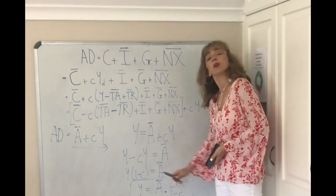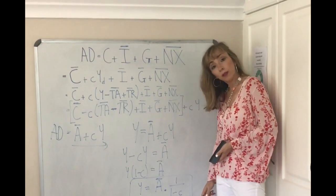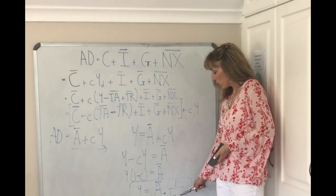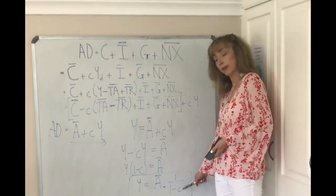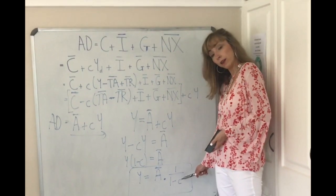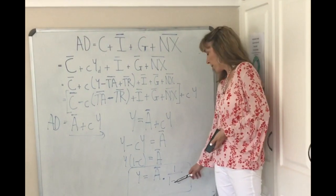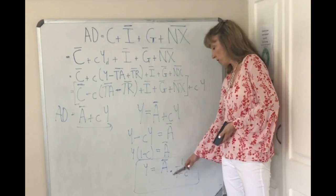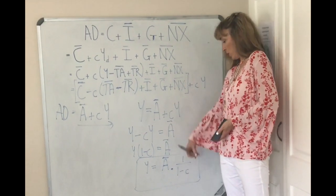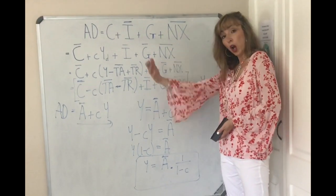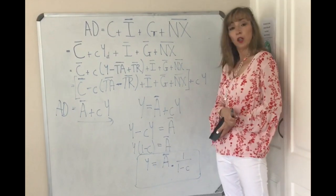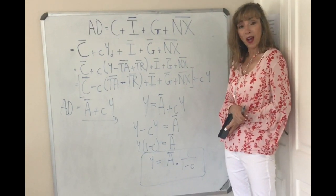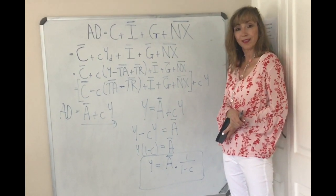The other thing that's going to change your multiplier is the effect of little c, the marginal propensity to consume. The larger that propensity to consume, the higher your level of income will be. Because you're subtracting little c on the bottom — the higher it is, the smaller the denominator — and since you're dividing by it, the larger will be your final income or output.